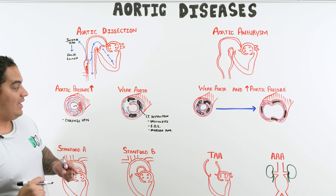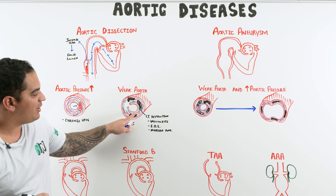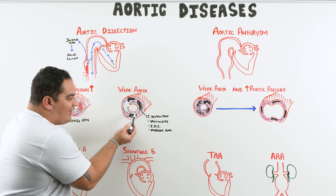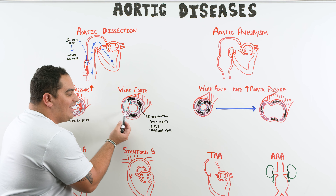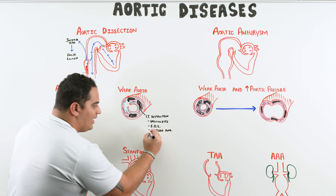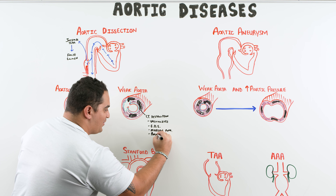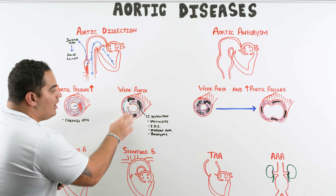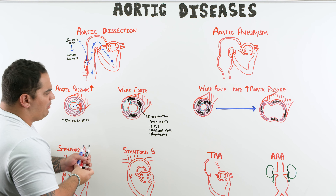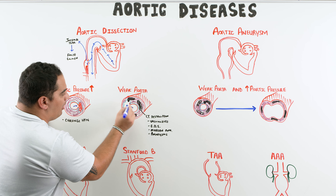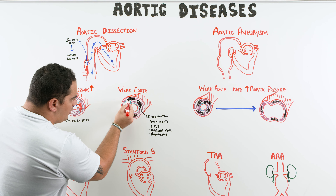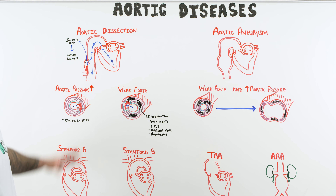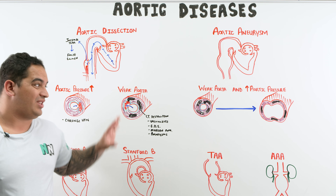There can also be proteolytic destruction of the vessel wall — a kind of natural weakness that causes the vessel to dilate. This is also seen in aneurysms, which we'll cover shortly. If you have a weak aortic wall, it's much easier for blood to pop through the intima and spill between the tunica media and tunica intima, creating that false lumen. So the two key causes are high pressures or connective tissue destruction.